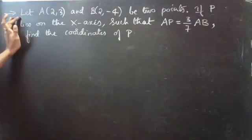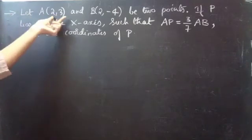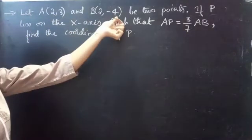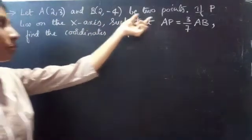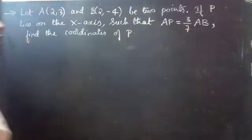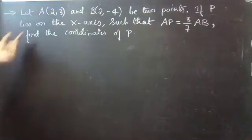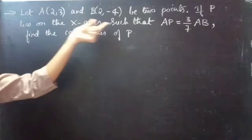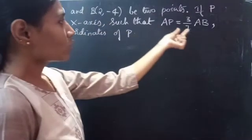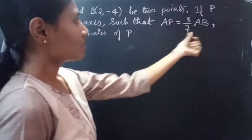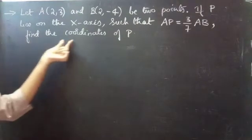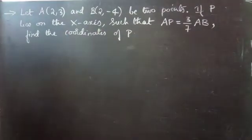Question: Let A(2, 3) and B(2, -4) be 2 points. If P lies on the x-axis such that AP equals 3/7 of AB, then find the coordinates of P.